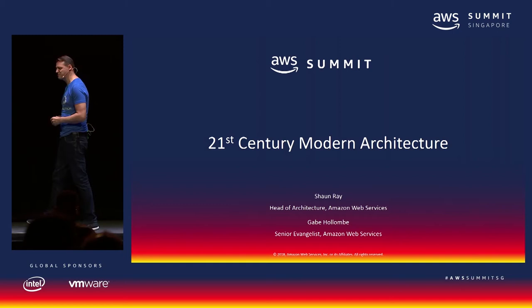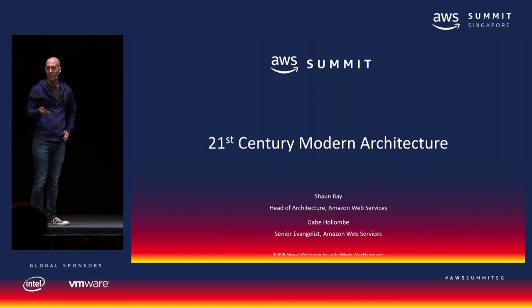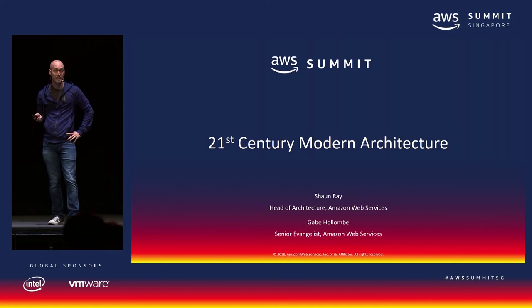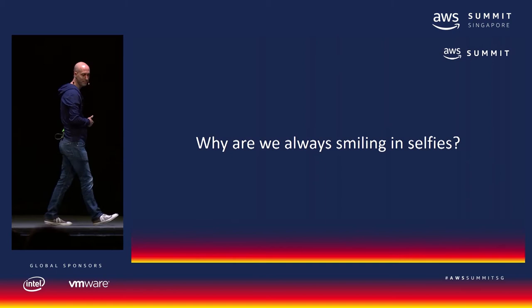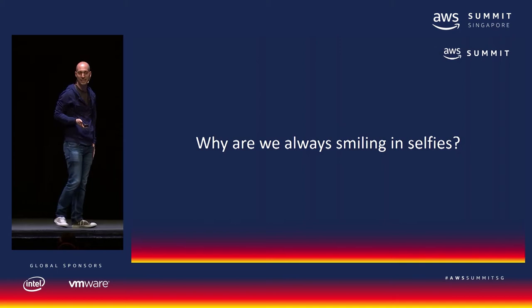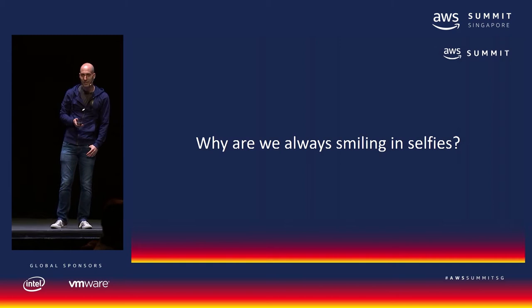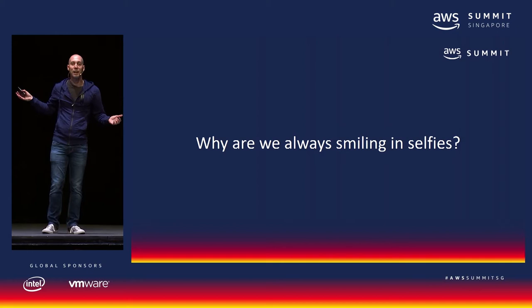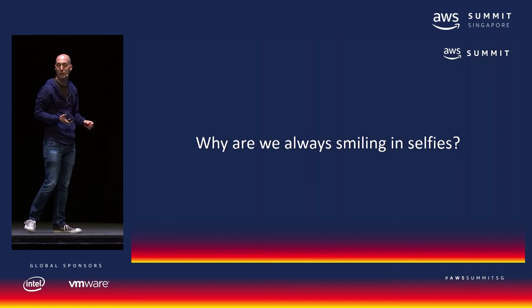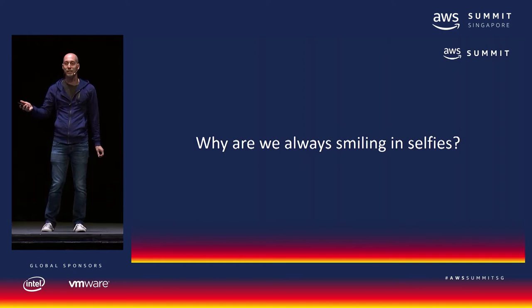Hey guys, welcome to the track. We've got a lot of cool demos today. Before we get into it, I have a question: why are we always smiling in selfies? The range of human emotions is a lot more varied than just happiness. Sometimes we're sad, sometimes we're angry, sometimes we're confused, sometimes we're just calm. So as we get into this demo, I want to do a little experiment.